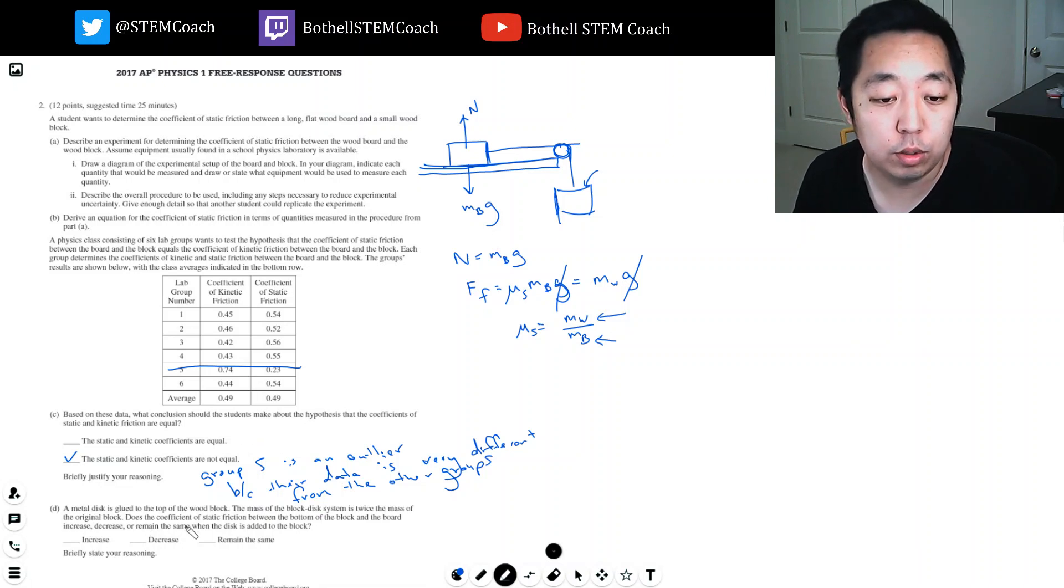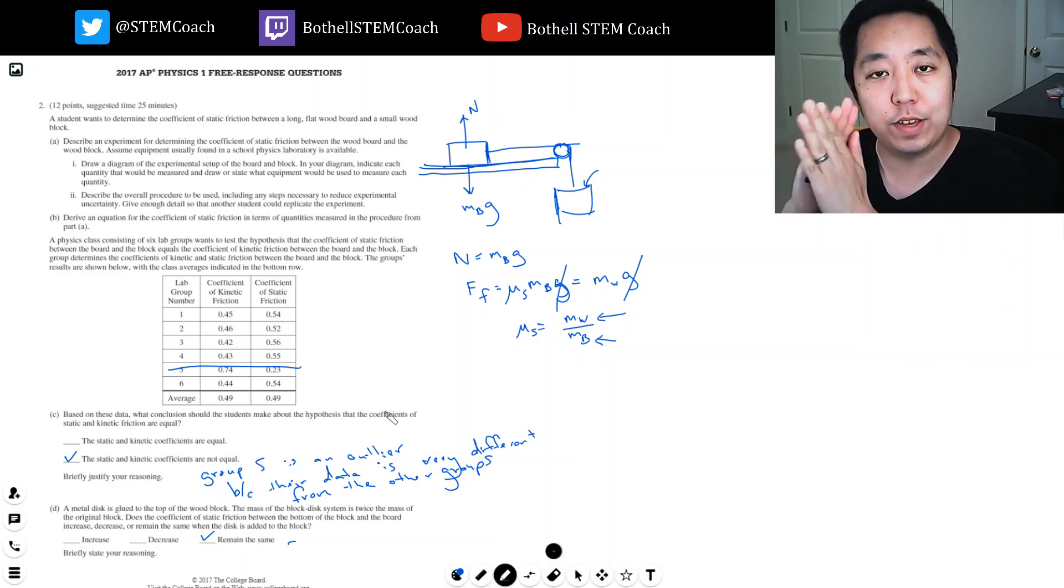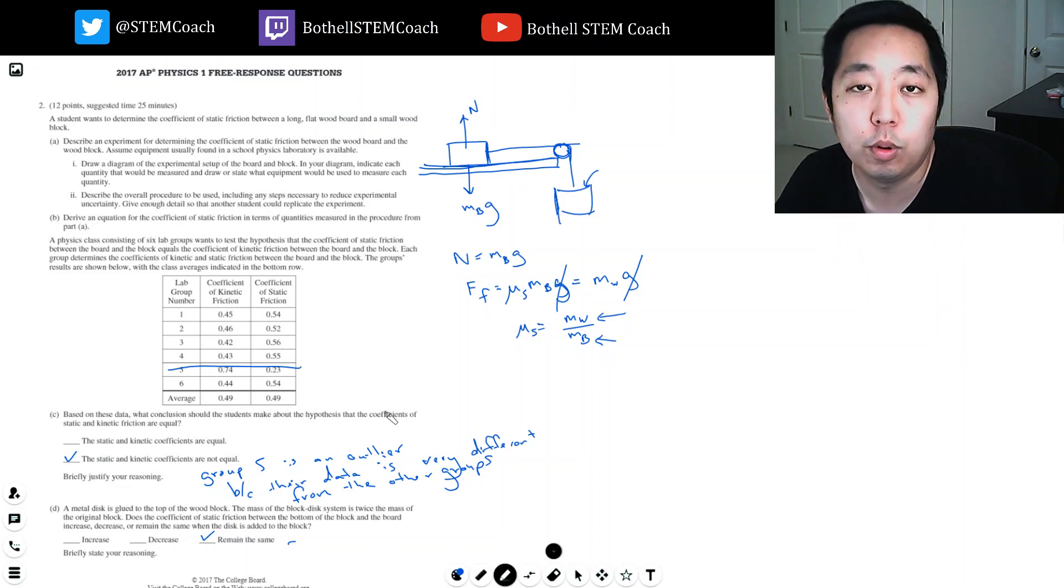Here, a metal disc is glued to the top of the wood block. The mass of the block disc system is twice the mass of the original block. Does the coefficient of static friction between the bottom of the block and the board increase, decrease, or remain the same? It remains, the coefficient of static friction remains the same because it's a property of the block itself. The amount of force it would take to make the thing move increases for sure, but the surface interface between the wood block and the wood board would be the same. And that's kind of the reasoning I would use.